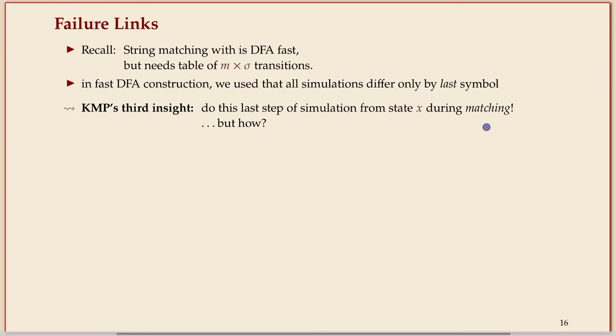Why would we not delay this simulation of this last step until we actually need it? So in a way, already before, we just had the current state and then the state X, and that was essentially all the information. But it's not at first clear how you can do this.